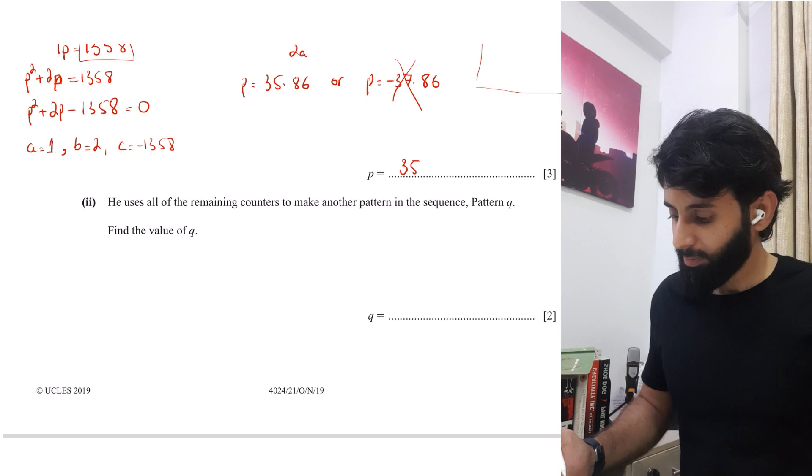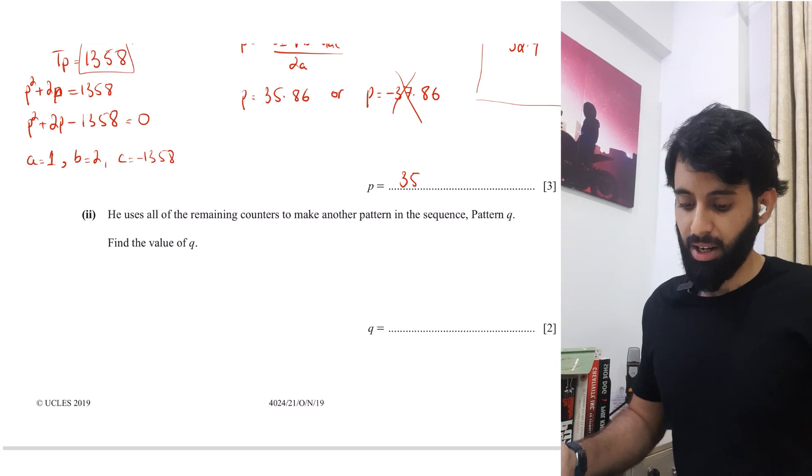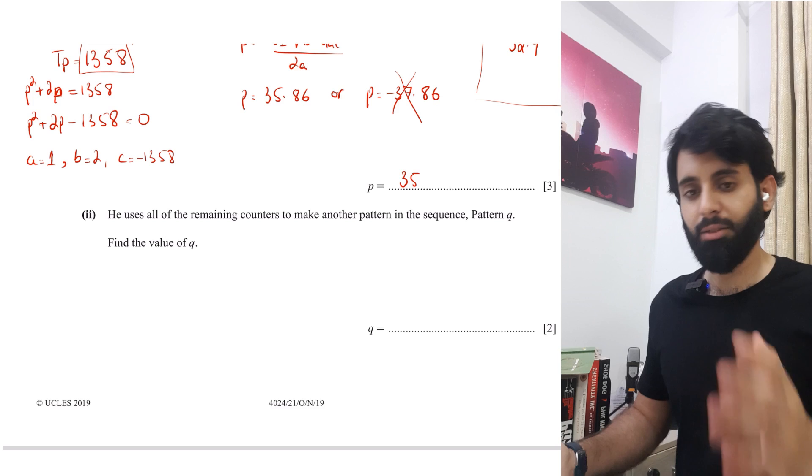Okay. Now, part two says he uses all of the remaining counters to make another pattern in the sequence, pattern Q, find the value of Q. Okay. Let's do that.